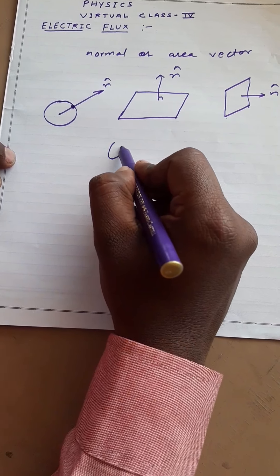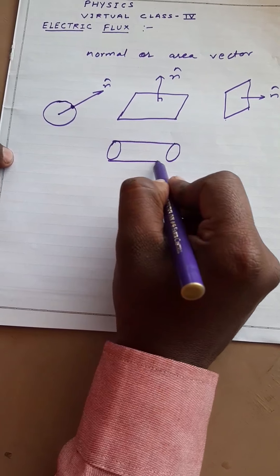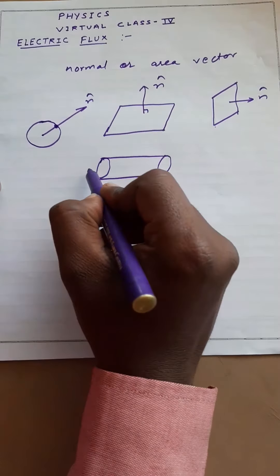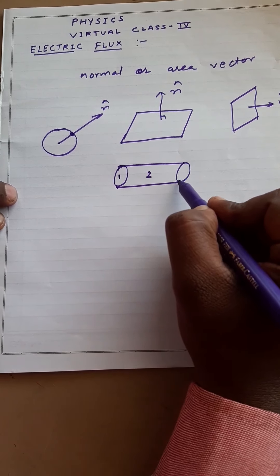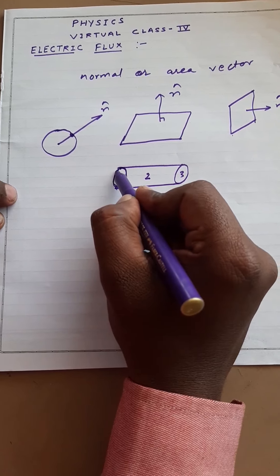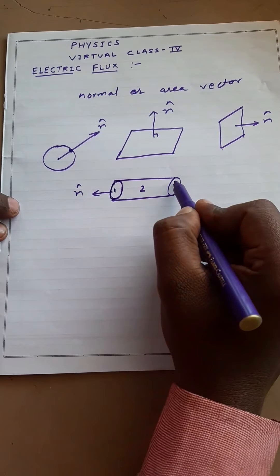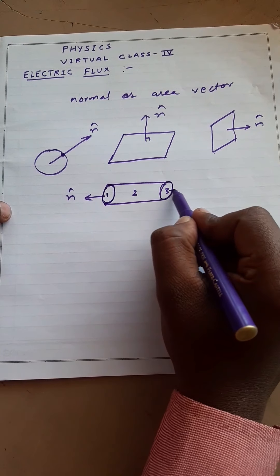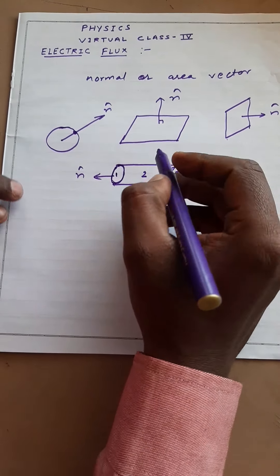If we consider a cylinder, how many surfaces are there? This is first surface, the curved surface is second one and again this is the third surface. For this surface, normal vector will be this one. For this surface, normal vector will be like this.